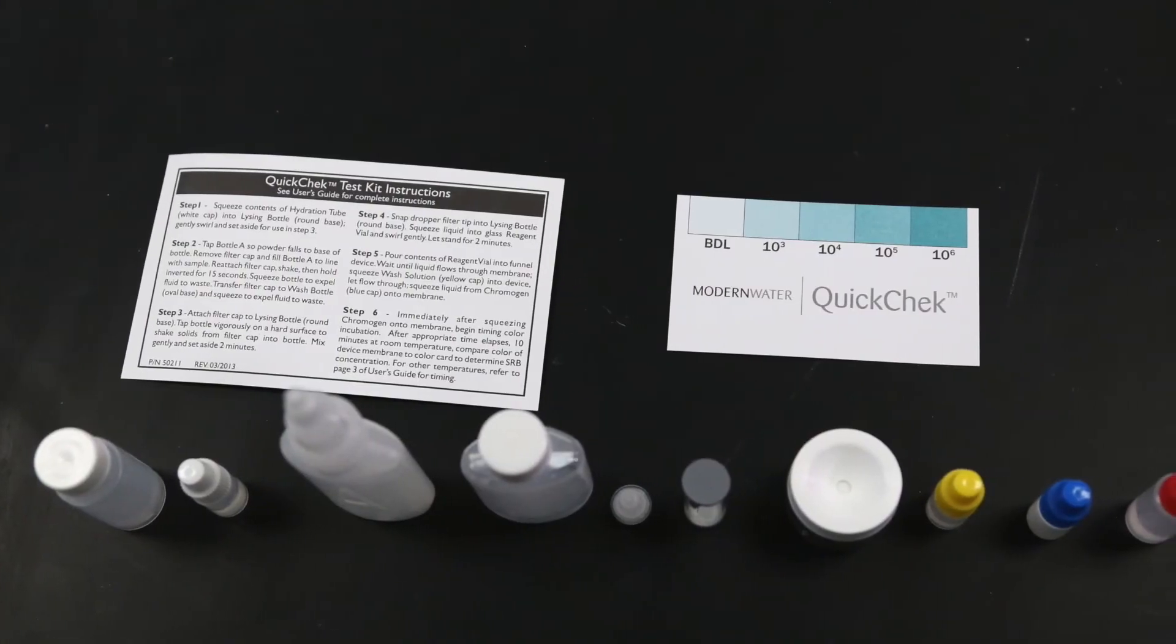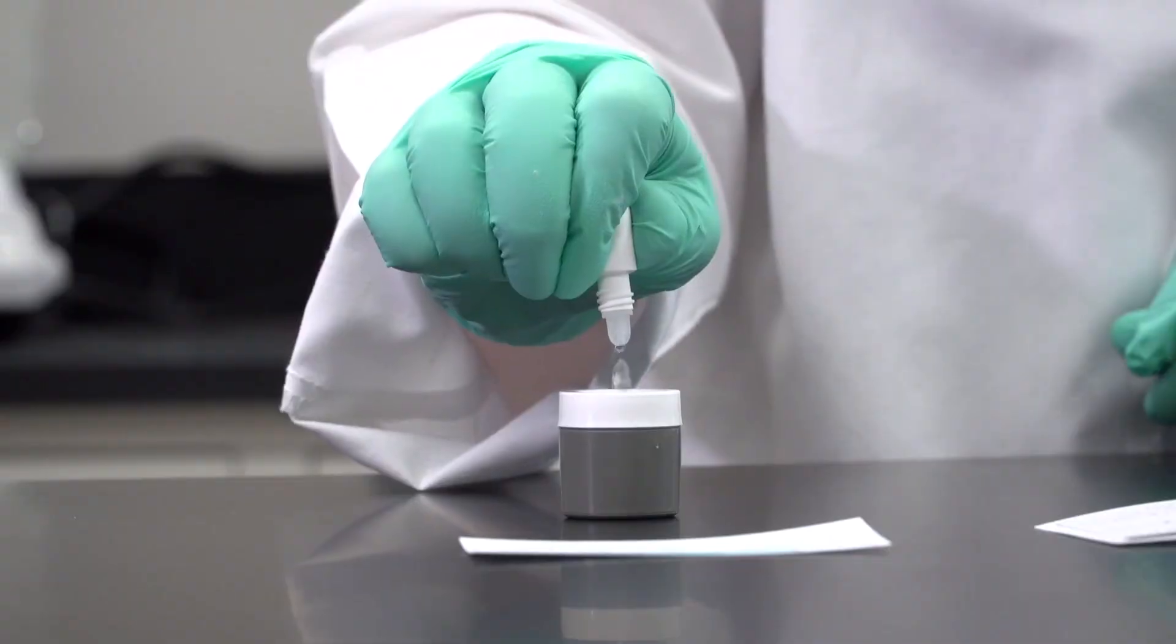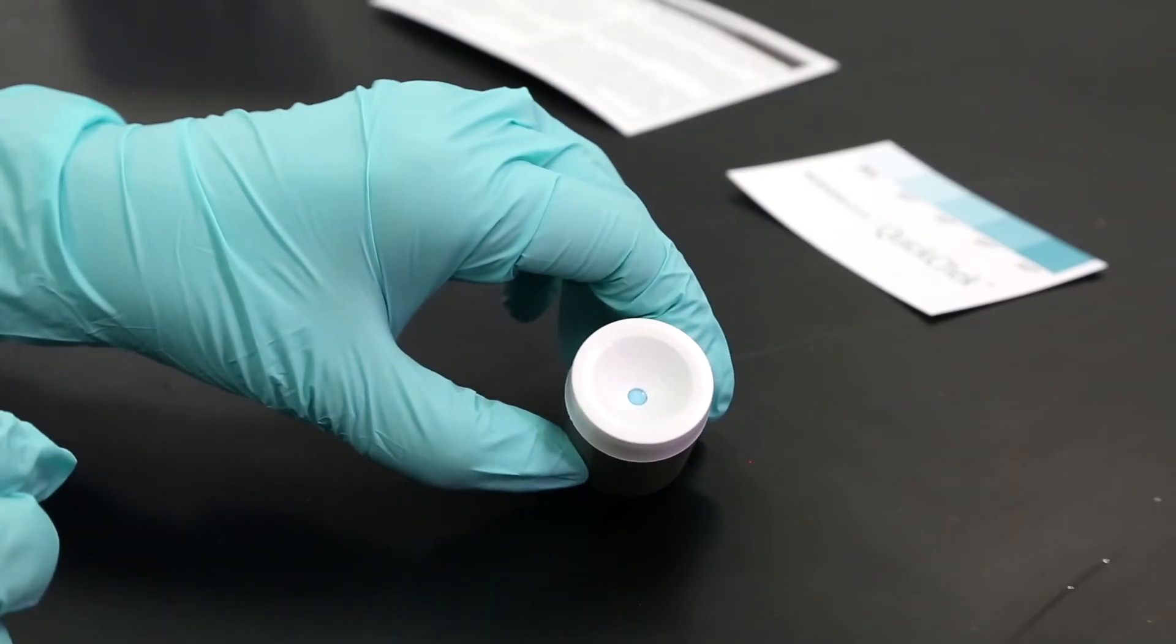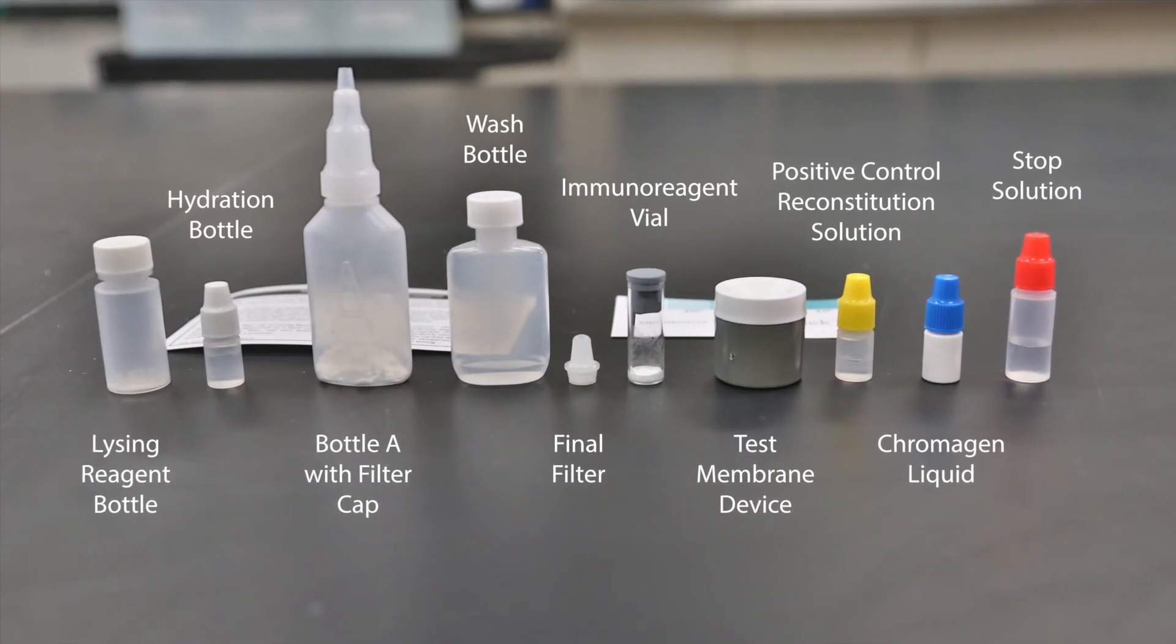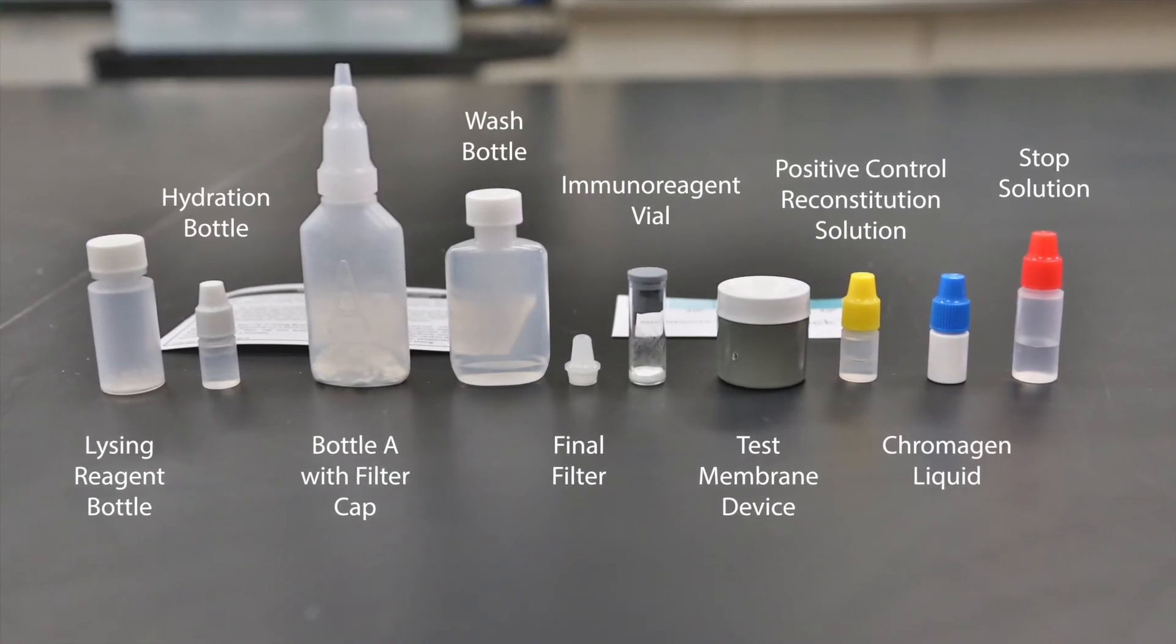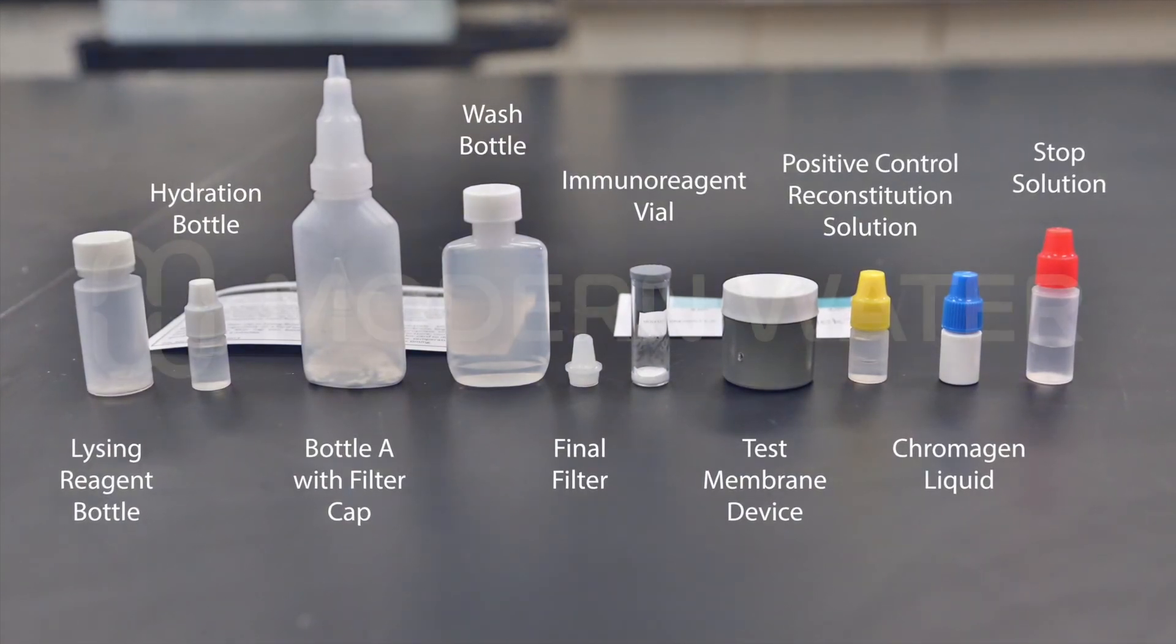The QuickCheck SRB detection system is disposable, completely self-contained, and includes all necessary materials to detect and enumerate SRB. This system is compliant with the new ASTM standard D8243-19 and provides accurate results in less than 10 minutes.